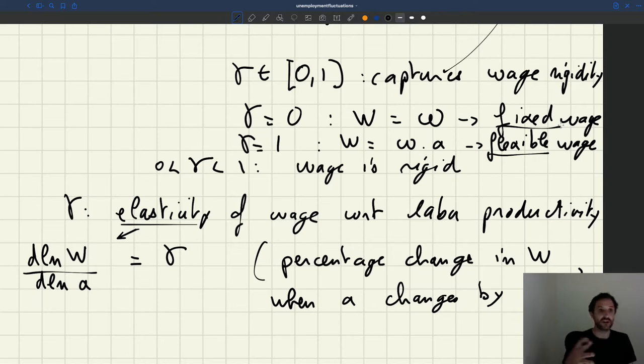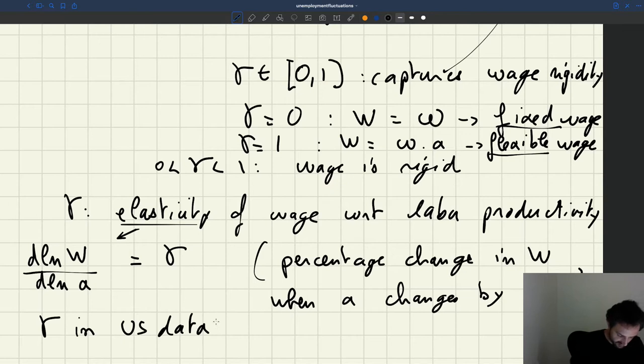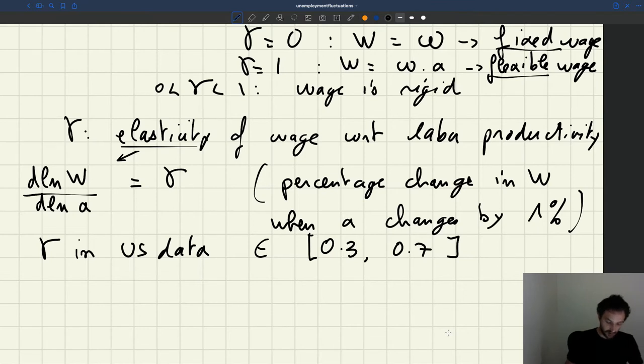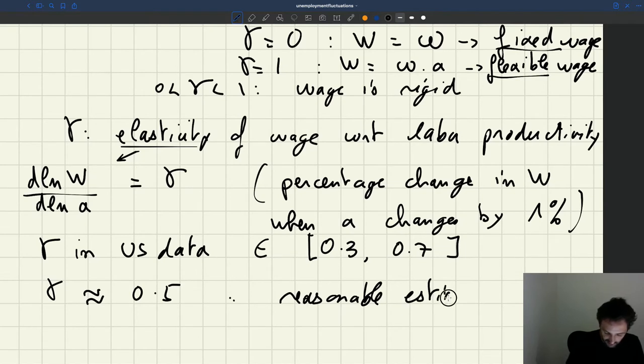And it turns out that if you look at the data, if you follow workers over time and you see how their productivity changes, how their wages change, you find that gamma in the US is between 0.3 and maybe 0.7. So it's in the interval 0.3 to 0.7. So that means that if you wanted to pick just some value, if you took an elasticity of gamma equal to 0.5, that seems to be kind of a reasonable estimate based on US evidence.